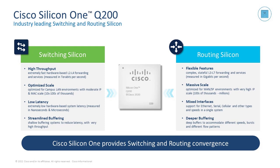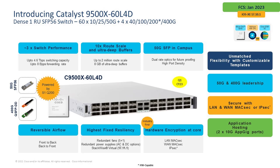The unique value proposition the Cisco Silicon One Q200 brings to the table is that the ASIC is flexible enough to work not only as a switching silicon but also as a routing silicon. With this ASIC we achieve convergence between both the switching and routing requirements. With that, let us take a look at the actual switch in question.